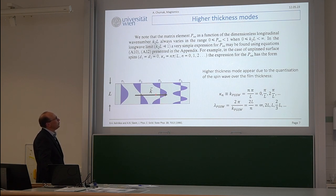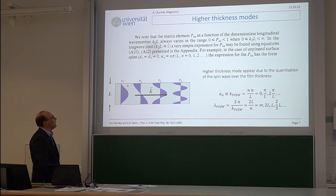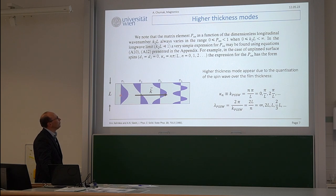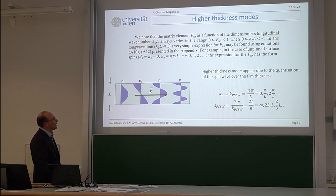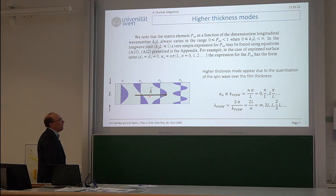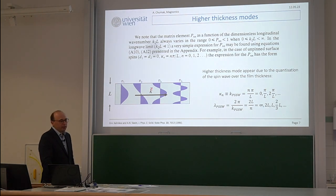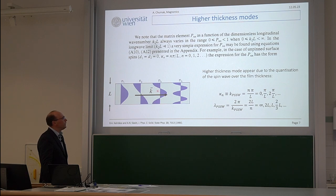Here is how these modes look like. The uniform mode N=0 is not shown, but first, second, third, and fifth modes are shown. The amplitude shows the amplitude of magnetization precession. In the middle you can have larger precession, and smaller at the edges, or vice versa — larger at the edges and zero in the middle. Usually you can excite odd modes 1, 3, 5 with a uniform alternating magnetic field, because the net area of one part is larger than the other.